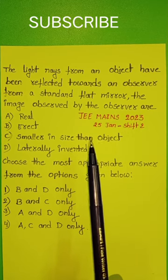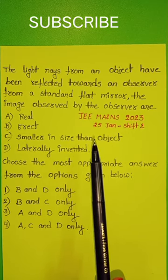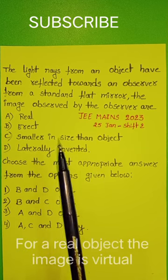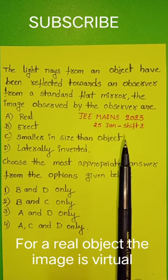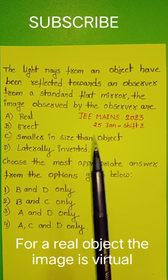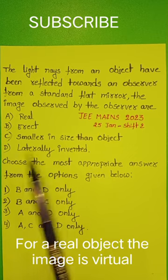In the given question, the mirror is a plain mirror and the object is real. So, a plain mirror produces a virtual, erect, and laterally inverted image. The size of the image is equal to the size of the object.